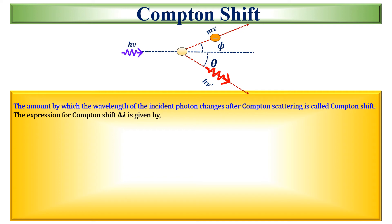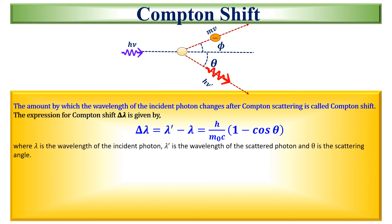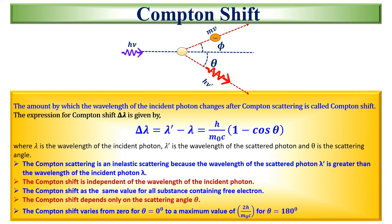The amount by which the wavelength of the incident photon changes after Compton scattering is called the Compton shift. The expression for Compton shift delta lambda is given by the formula, where lambda is the wavelength of the incident photon, lambda prime is the wavelength of the scattered photon, and theta is the scattering angle. The Compton scattering is an inelastic scattering because the wavelength of the scattered photon lambda prime is greater than the wavelength of the incident photon lambda. The Compton shift is independent of the wavelength of the incident photon and has the same value for all substances containing free electrons. The Compton shift depends only on the scattering angle theta, and varies from 0 for theta equal to 0 degrees to a maximum value of 2H/M_0c for theta equal to 180 degrees.